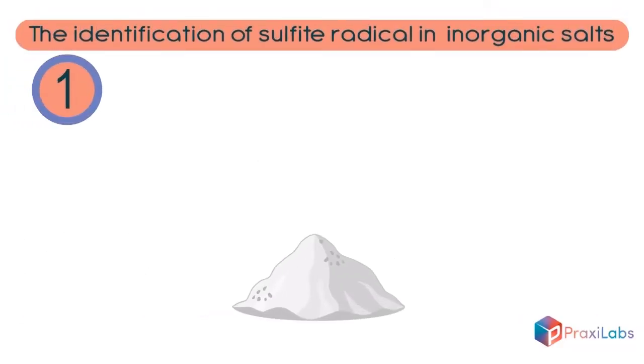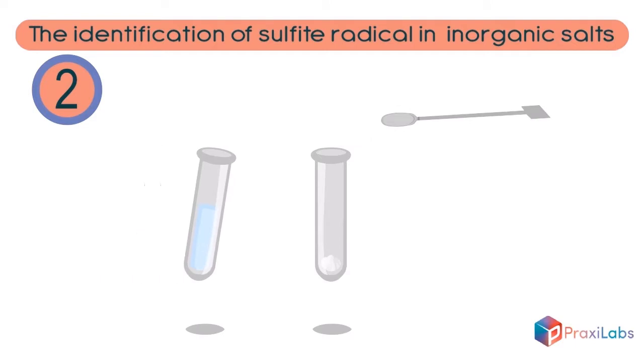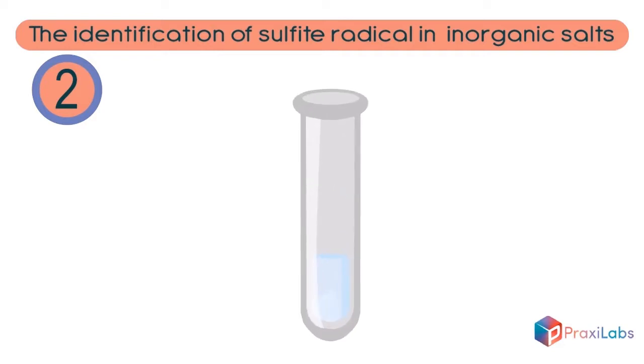Choose potassium sulfite salt from the table of salts. Place a very small amount of the salt in a test tube using a spatula. Then add 1 to 2 milliliters of water to test the solubility of the salt in water. Notice the solubility of the salt in water.